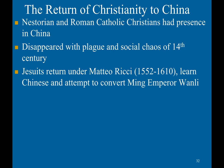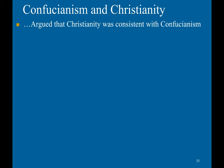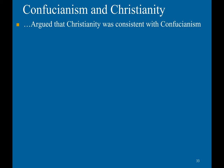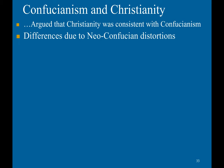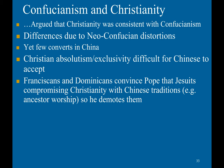The Jesuits returned under Matteo Ricci, who learned Chinese and attempted to convert the Ming emperor Wanli. He also brought Western mechanical technology like prisms, harpsichords, and clocks. He argued that Christianity was consistent with Confucianism, with the differences merely due to Neo-Confucian distortions. Yet there were very few converts in China, as Christian absolutism and exclusivity were difficult for the Chinese to accept. Franciscans and Dominicans convinced the Pope that the Jesuits were compromising Christianity with Chinese traditions like ancestor worship, so he demoted them.